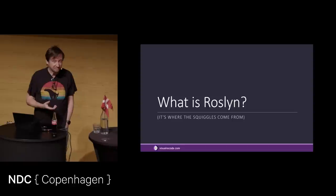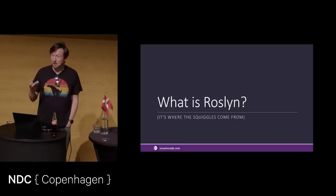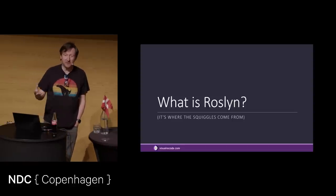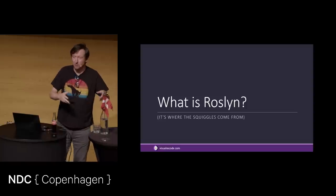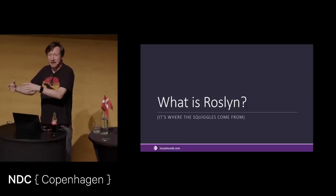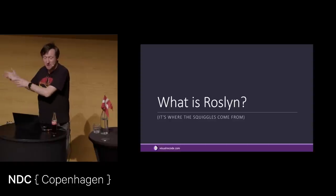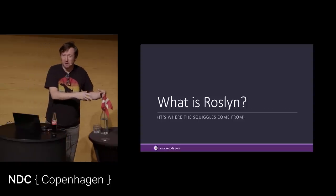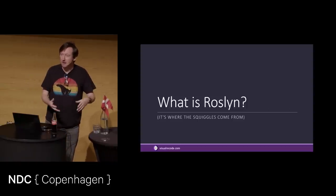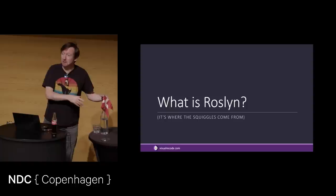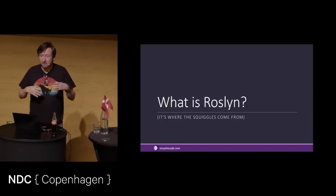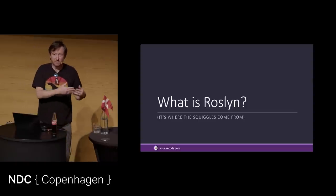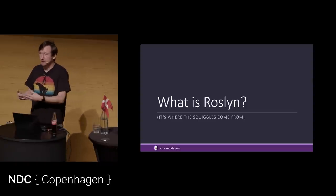So Roslyn — basically it's where those red squiggles and green squiggles under your code come from. It's a lot more than that. It's the thing that compiles C# code into MSIL, and then that gets passed on to the JIT that turns it into native code. But when Microsoft rewrote the C# compiler for C# 6, before that it had been written in C++. And one of the sort of key milestones for any programming language is that the compiler for the language should be written in the language.